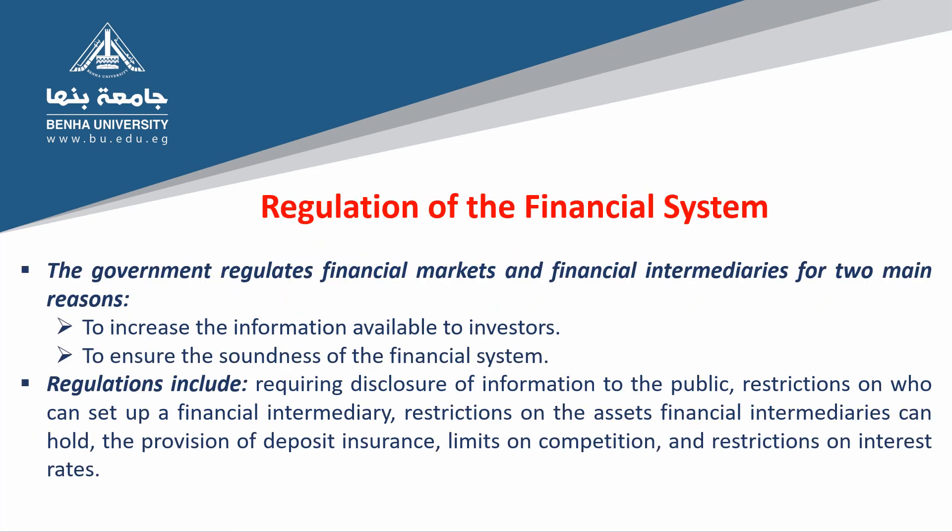Regulation of the financial system: the government regulates financial markets and financial intermediaries for two main reasons. First, to increase the information available to investors. Second, to ensure the soundness of the financial system. Regulations include requiring disclosure of information to the public, restrictions on who can set up a financial intermediary, restrictions on the assets financial intermediaries can hold, the provision of deposit insurance, limits on competition, and restrictions on interest rates.